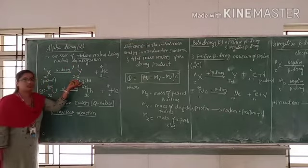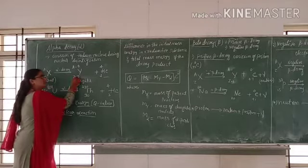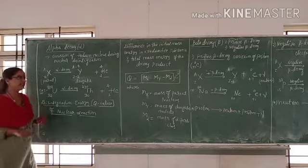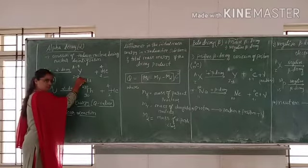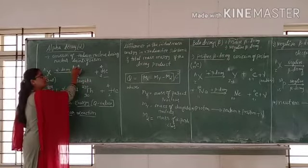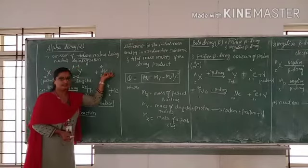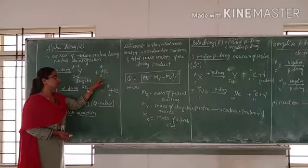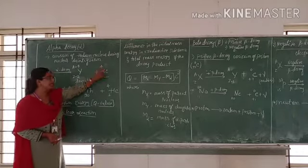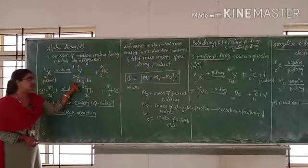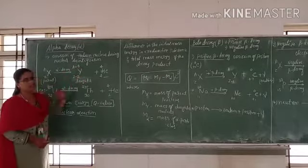In the daughter nucleus, the atomic number is decreased by 2, so it becomes Z minus 2. The mass number is decreased by 4, becoming A minus 4.